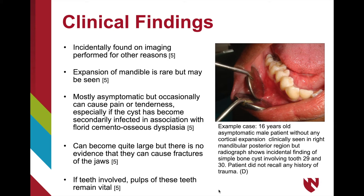Traumatic bone cysts are incidentally found on imaging performed during routine clinical radiography since they rarely present with clinical expansion. They are mostly asymptomatic, but can occasionally cause pain or tenderness, especially if secondarily infected in association with florid cemento-osseous dysplasia. Although it is a slow-growing lesion, they may become large if not found during routine appointments. However, there is no evidence that they can cause fracture of the jaws. It is also noted that the pulps of involved teeth remain vital, so be careful in diagnosing any possible pain in the affected region.